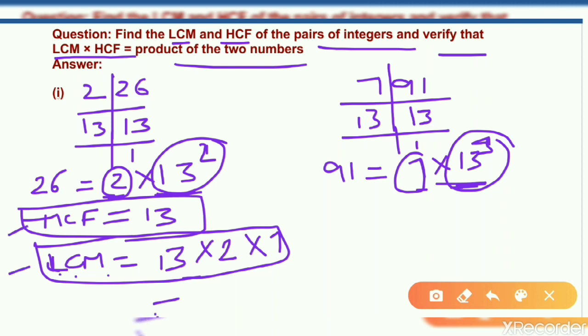Now by multiplication what I get here? I get LCM is 182. So 182 is the LCM and 13 is the HCF.